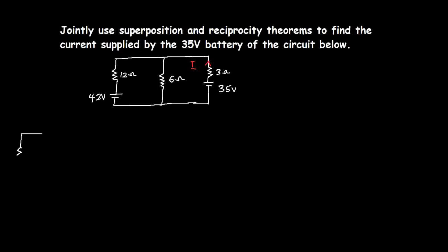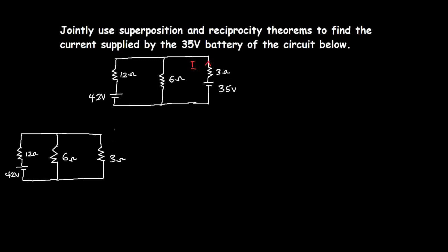With the 42-volt source acting alone, we have the 12-ohm resistor, the 42-volt source, a 6-ohm resistor in the middle, and a 3-ohm resistor. We need to find the current in the branch where the 35-volt source was. I'll choose the direction of the current to match the positive terminal of the voltage source, naming this current I.